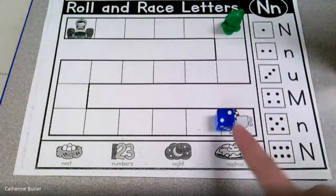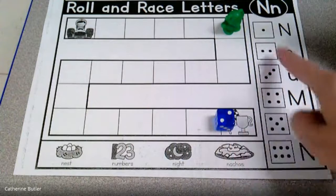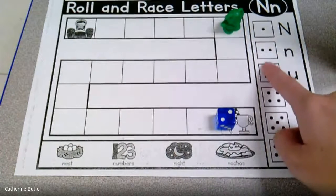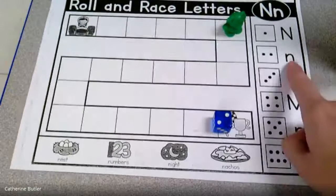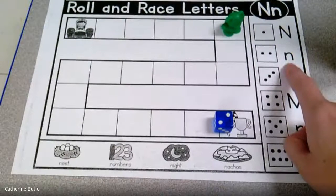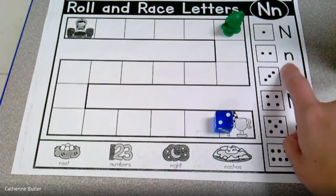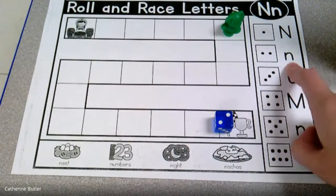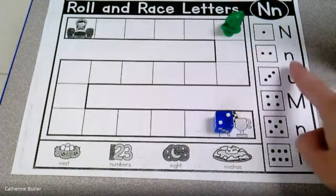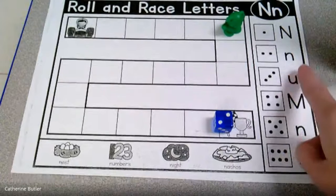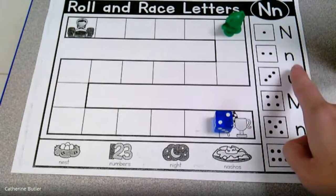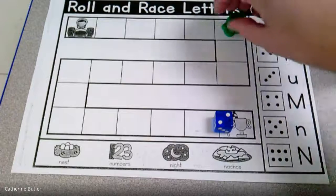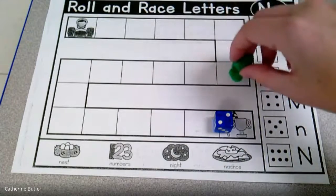Ooh, I rolled what number? Yeah, two. Let's find it. Oh, there it is. There's the number two. Let's see. Is that an N? Yeah, you're right. That is the letter N. But before I move, can I say the sound? What sound does N make? Yeah, it says N. Very good. Now I can move one, two.